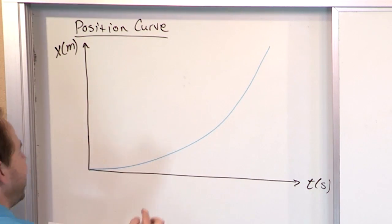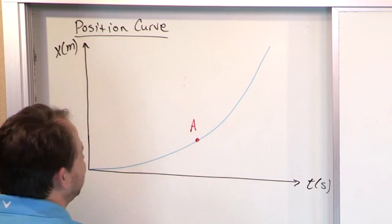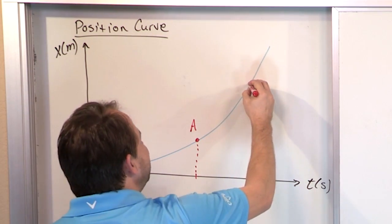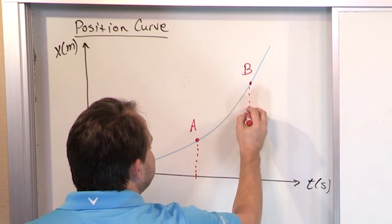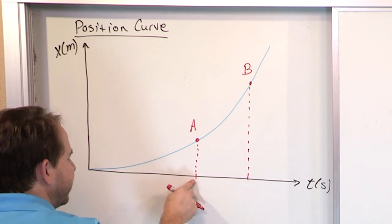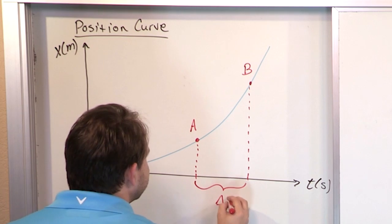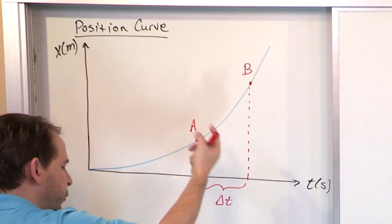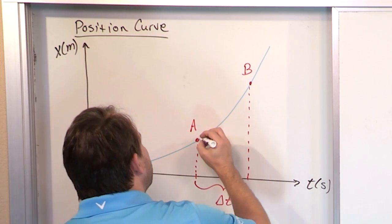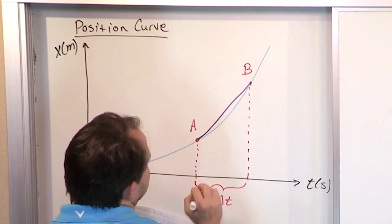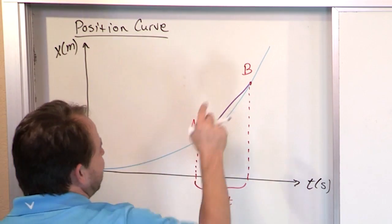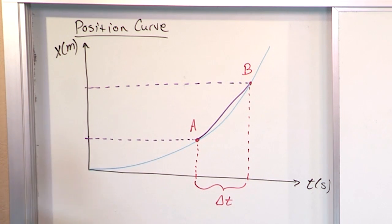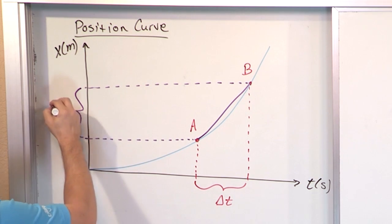To put it into math terms: we want to find the instantaneous velocity at point A, which corresponds to some value of time. What we do is pick some point B far away from A — point B is some point on the curve at some position in time. This is time one, this is time two. The interval of time, we call it delta T — it's just how long between A and B in time. We'll estimate the velocity at A by finding the slope of the line segment between A and B. The rise is delta X — how far the position changed — and the run is delta T.